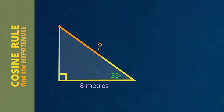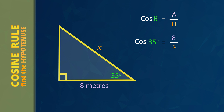Now we will do an example to find the hypotenuse using the cos rule. Here, the hypotenuse is the length of the string up to the kite. We mark the hypotenuse with an X because that's what we're trying to find. The two things we already know are the size of this angle of 35 degrees and the length of this adjacent side of 8 meters. First, write the cos rule: cos theta equals adjacent side divided by hypotenuse. Now substitute the numbers. Angle theta is 35 degrees, the adjacent side is 8 meters, and the hypotenuse is X. Notice that X is down on the bottom of the fraction. To get X by itself we have two steps: multiply both sides of the equation by X, and then divide both sides of the equation by cos 35.